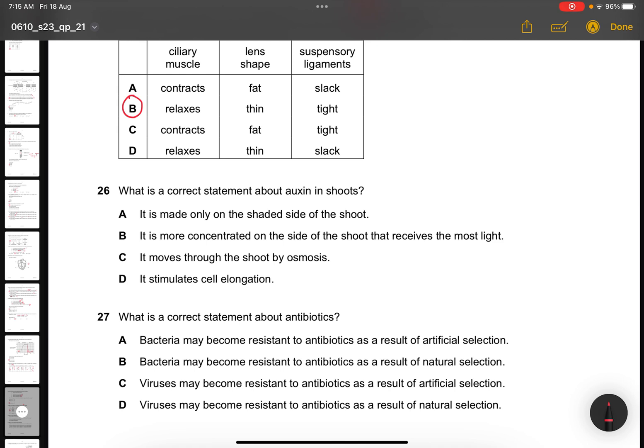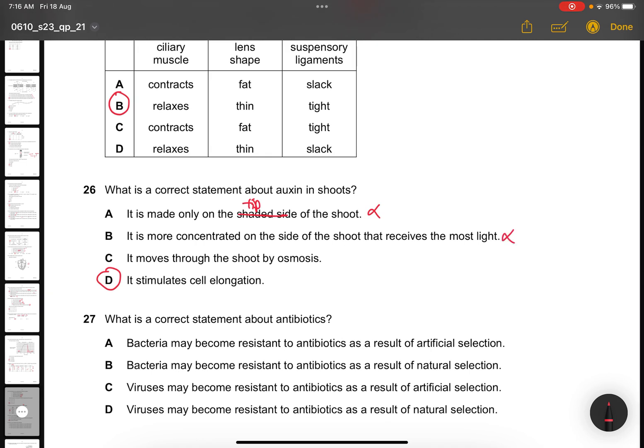Question 26. What is the correct statement about auxin in shoots? The answer is it stimulates cell elongation. It's not made on the shaded side, it should be made at the tip of the shoot. It is more concentrated on the shoot that we see? No, it doesn't. It's usually at the shaded side. And it moves through the shoot by osmosis? No, it should be by diffusion. The answer is B.